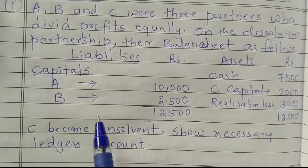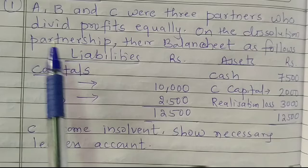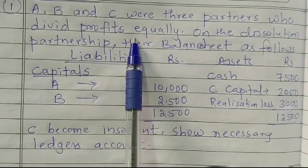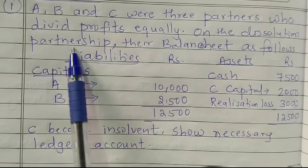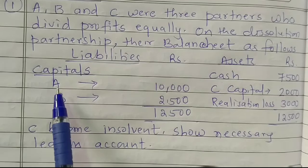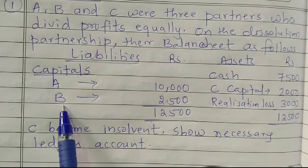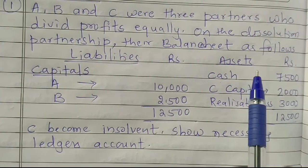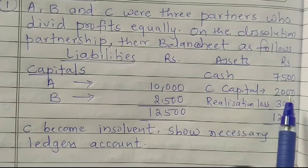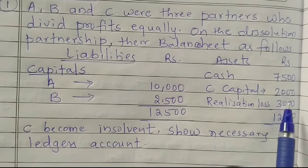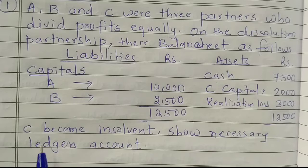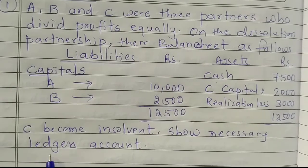Now let's start to solve this problem. Here A, B, and C were three partners who divide the profits equally, on the dissolution of their partnership. Their balance sheet shows: on the liabilities side, capital of partner A is 10,000 and partner B is 2,500. On the asset side, cash is 7,500, debit balance of C's capital is 2,000, and realization loss is 3,000. Total is 12,500 on both sides. C has become insolvent — show the necessary ledger accounts.